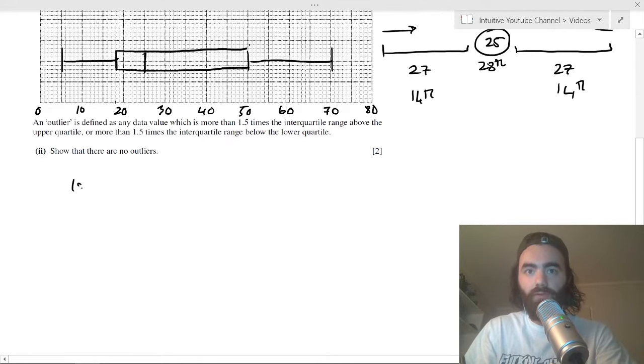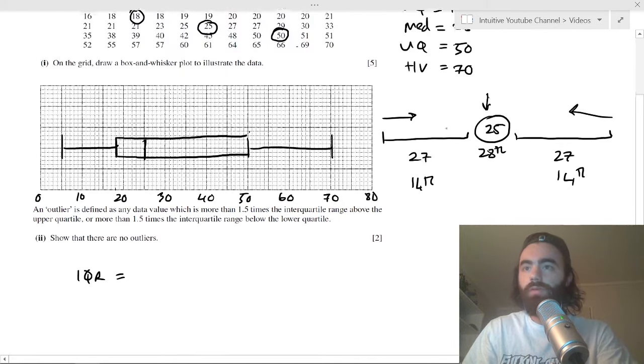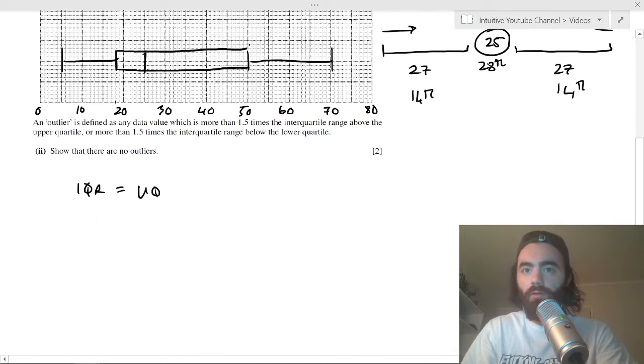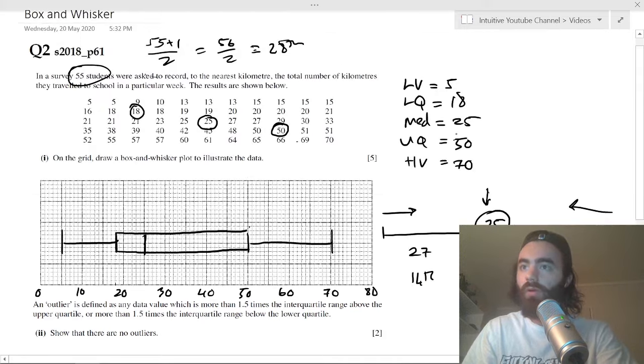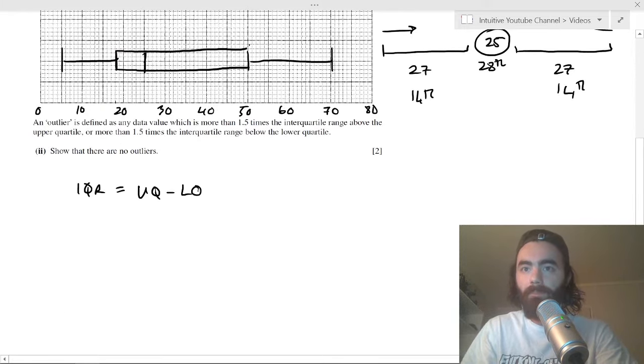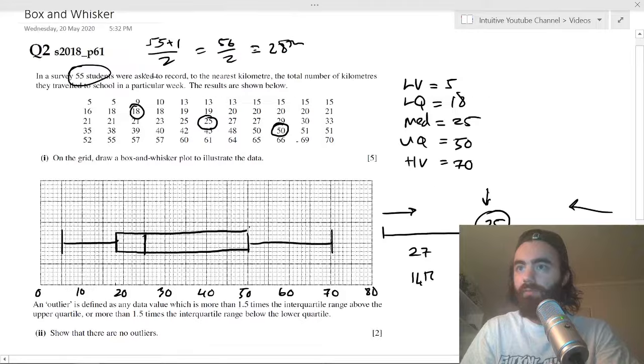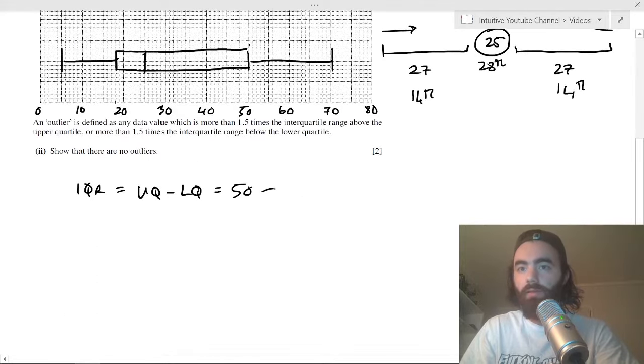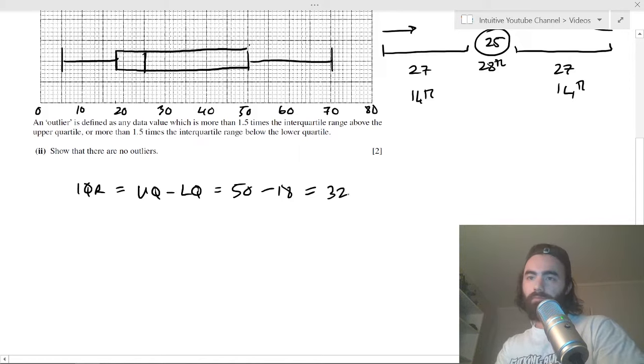First you find the interquartile range, which is your upper quartile minus your lower quartile. So that's 50 minus 18, which is 32. And 1.5 times your interquartile range equals 48.